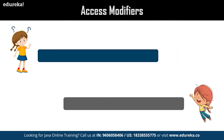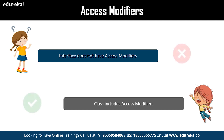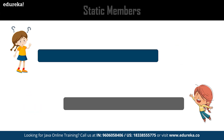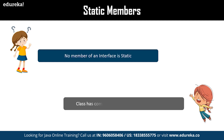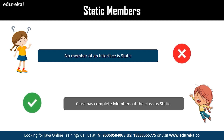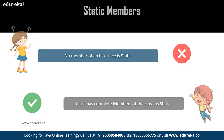The next difference is access modifiers — interfaces do not have access modifiers; by default, interfaces take up public as their access modifier, whereas classes provide private access modifiers which are not available in the interface. The next one is static members — interface cannot have any static members, whereas a class has all its members as static.